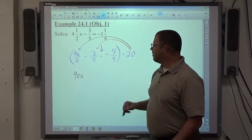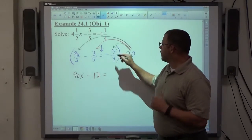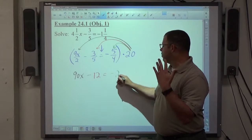20 divided by 5 is 4 times negative 3 is negative 12. 20 divided by 4 is 5 times negative 5 is negative 25.